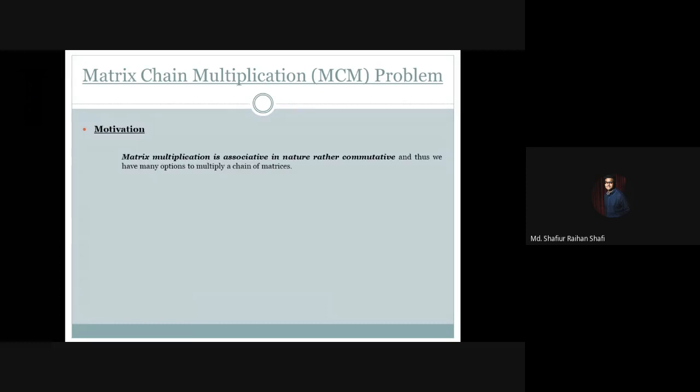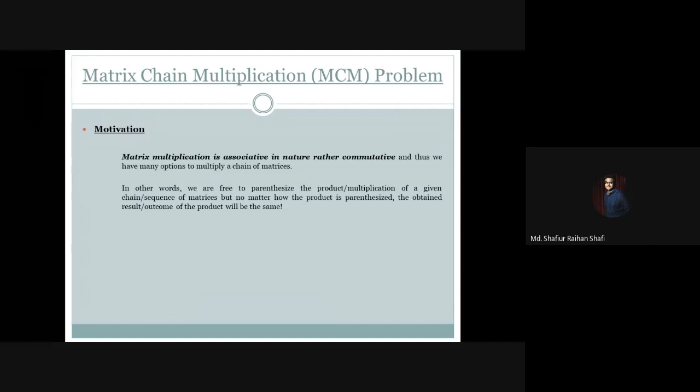Matrix multiplication is associative in nature. And thus we have many options to multiply a chain of matrices. We are free to parenthesize the product or multiplication of a given chain or sequence of matrices. But no matter how the product is parenthesized, the obtained result or outcome of the product will be the same.